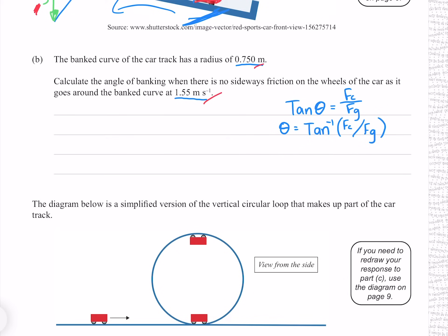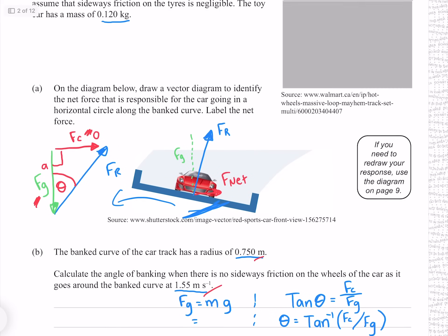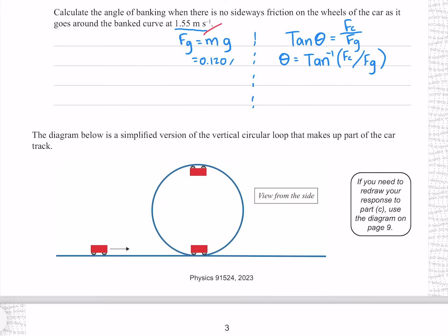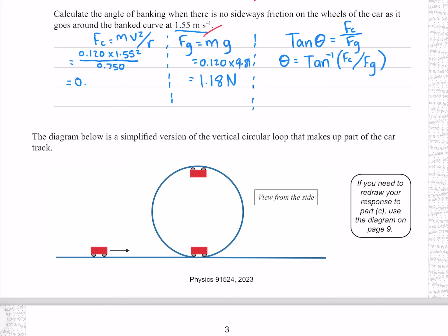We now need to find our centripetal and gravitational forces. Our gravitational force is just mass times the acceleration due to gravity, where our mass was 0.120 and acceleration due to gravity is 9.81, giving 1.18 newtons to 3 significant figures. To find our centripetal force, we use mv² over r, where we know all these values, giving 0.384 newtons to 3 significant figures. Putting these into our final equation gives 18.0 degrees.